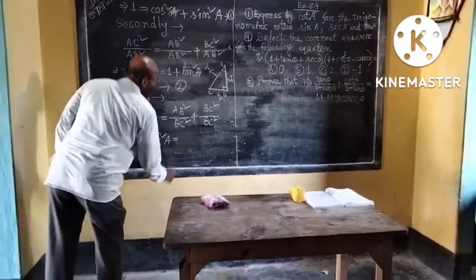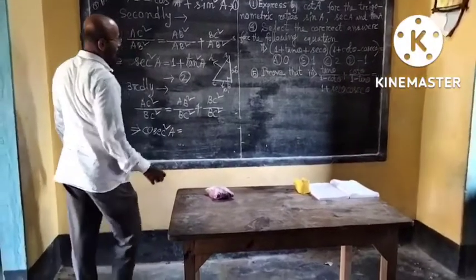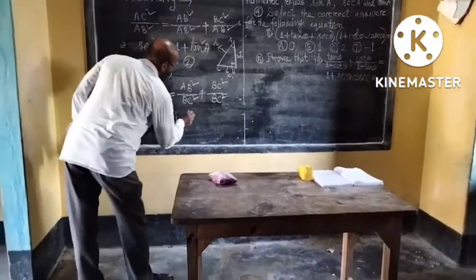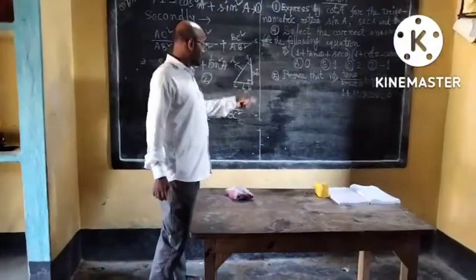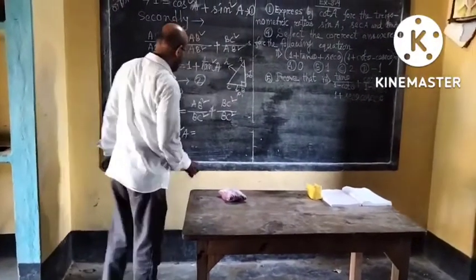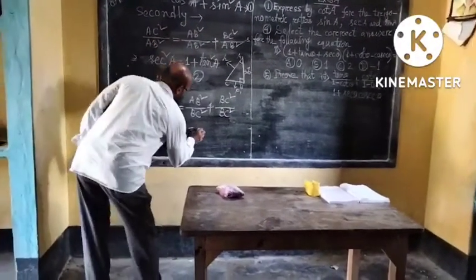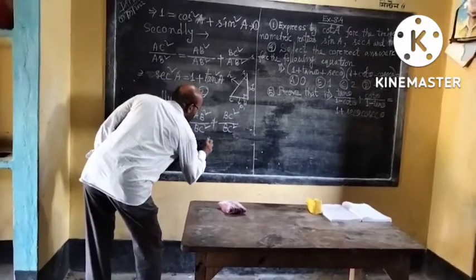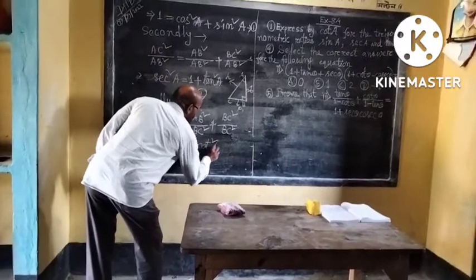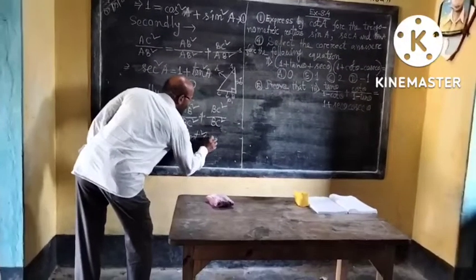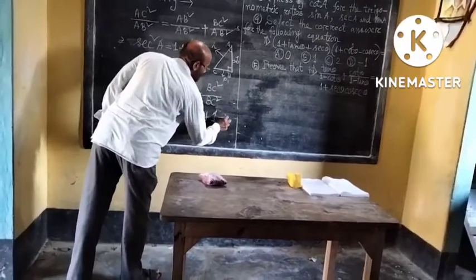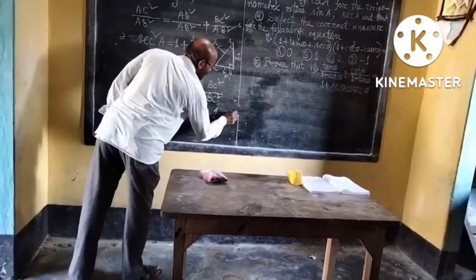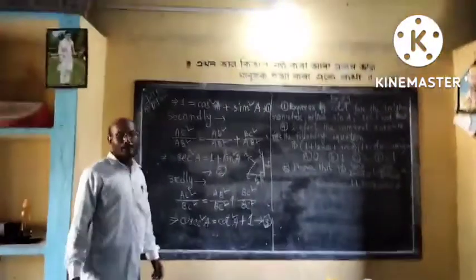If you do AB by BC squared — base squared by B squared — that gives S squared E plus 1, which is the third identity.